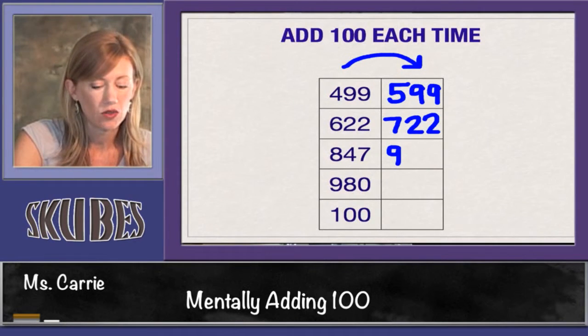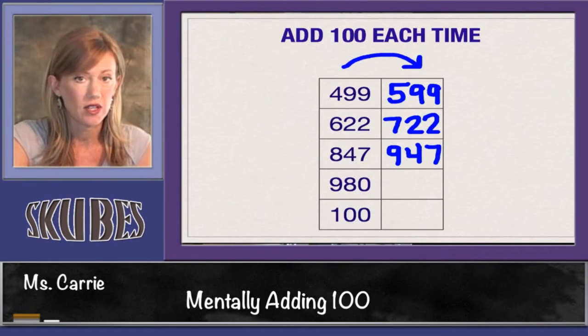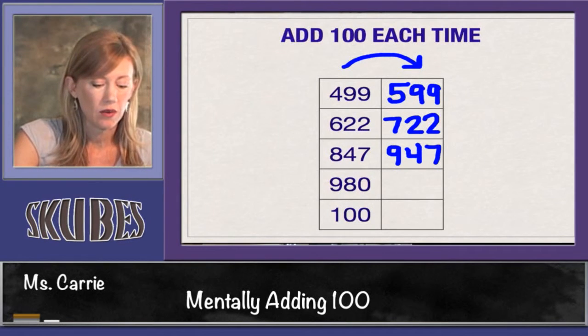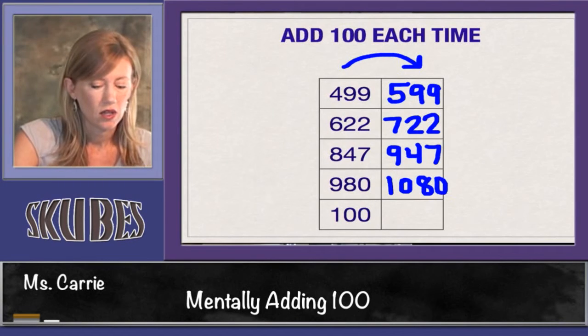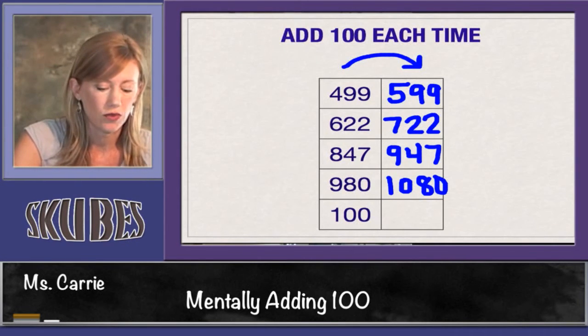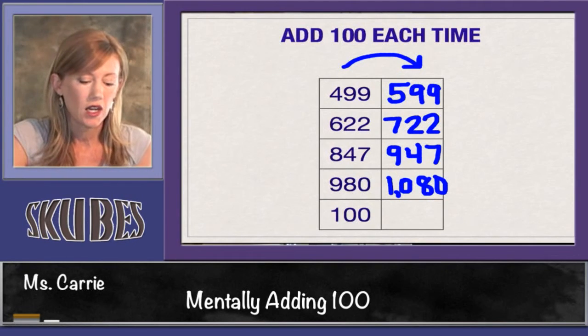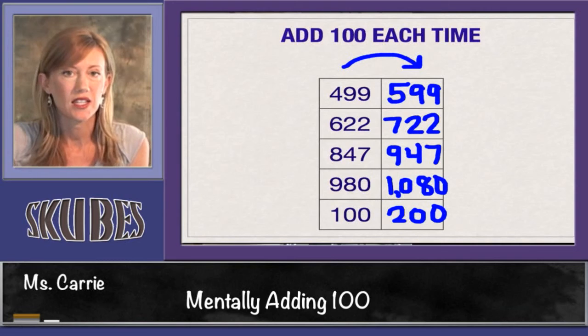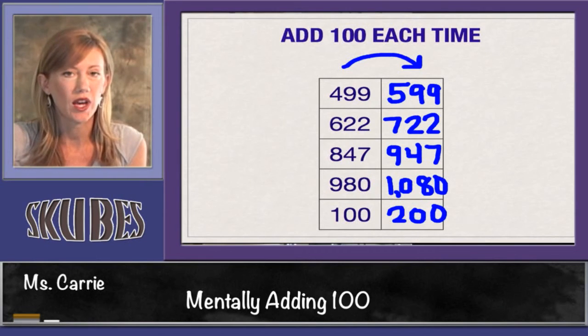847 would become 947. The eight becomes a nine. The four and the seven stay the same. 980 becomes 1,080. The tens stay the same and the ones stay the same, but the nine went up one place to the ten. Don't forget to add your comma after the one for the thousands place. If we added 100 to 100, we would get 200. That concludes our lesson today on mentally adding 100 to a number.